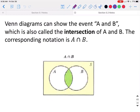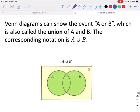Venn diagrams can show the events A and B, which is also called the intersection of A and B. The corresponding notation is A and B with that little arc showing the symbol and. So in this section the part that is highlighted green is the intersection of A and B. This would be something that happens in event A and also happens in event B.